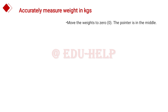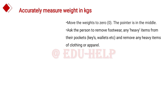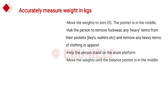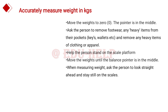Steps to accurately measure weight in kilograms: students should move the weighing machine's weight to zero with the pointer in the middle. They should ask the person to remove footwear and any heavy items from their pockets like keys and wallets, and remove any heavy items of clothing. They should help the person stand on the scale platform and move the weights until the balance point is in the middle.